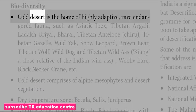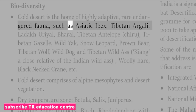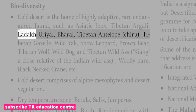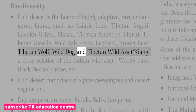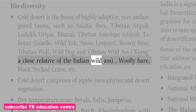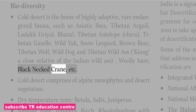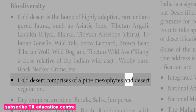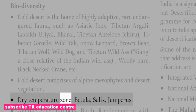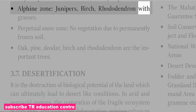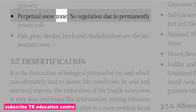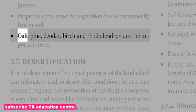Cold desert is home to highly adaptive rare and endangered fauna such as Asiatic Ibex, Tibetan Argali, Ladakh Urial, Tibetan Antelope (Chiru), Tibetan Gazelle, Wild Yak, Snow Leopard, Brown Bear, Tibetan Wolf, Wild Dog, Tibetan Wild Ass (Kiang), Woolly Hare, Black-Necked Crane, etc. Cold desert comprises alpine mesophytes and desert vegetation zones: the dry temperate zone has Betula, Salix and Juniperus; the alpine zone has junipers, birch and rhododendron with grasses; the perpetual snow zone has no vegetation due to permanently frozen soil. Oak, pine, deodar, birch and rhododendron are the important trees.